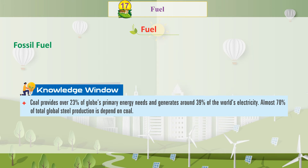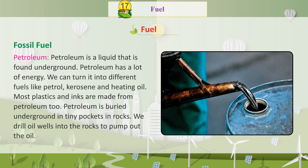Knowledge window: Coal provides over 23% of the globe's primary energy needs and generates around 39% of the world's electricity. Almost 70% of total global steel production depends on coal.